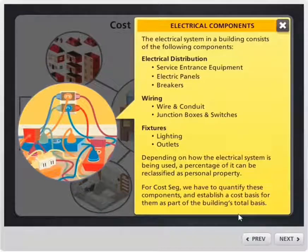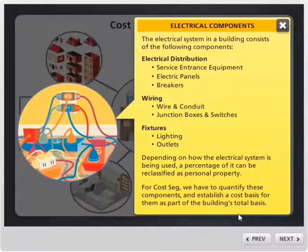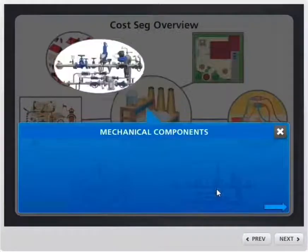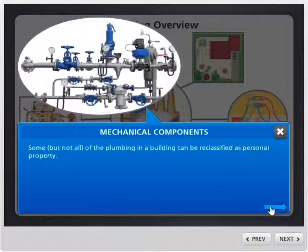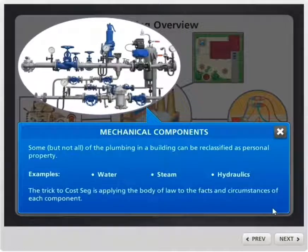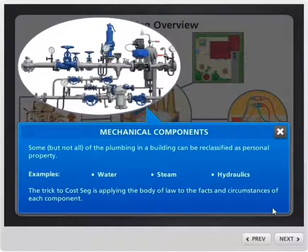For cost segregation, we have to quantify all these costs as they relate to the purchase price, so that when we break up all the pieces, they add up to the same total cost of the improvements. Mechanical components — some, but not all, of the plumbing in the building can be reclassified as personal property. The trick is to apply the body of law, which is a little complicated, but we have to apply it to the facts and circumstances to determine whether or not we can reclassify it.